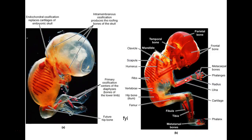Just remember — I'll keep it very simple. Flat bones of the skull: developed by what type of ossification? Intramembranous. Long bones: developed by what kind of ossification? Endochondral.